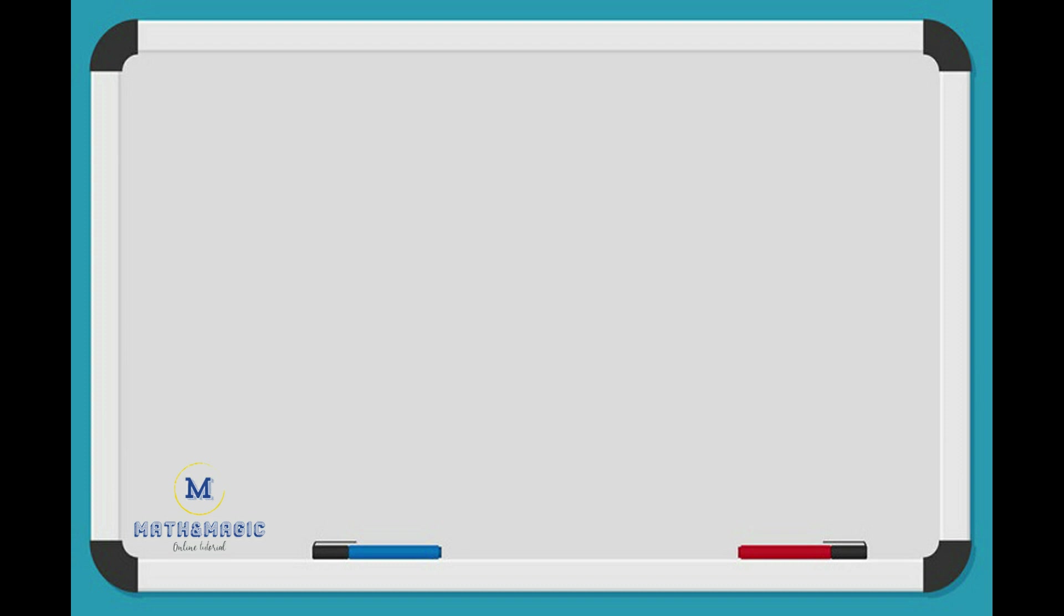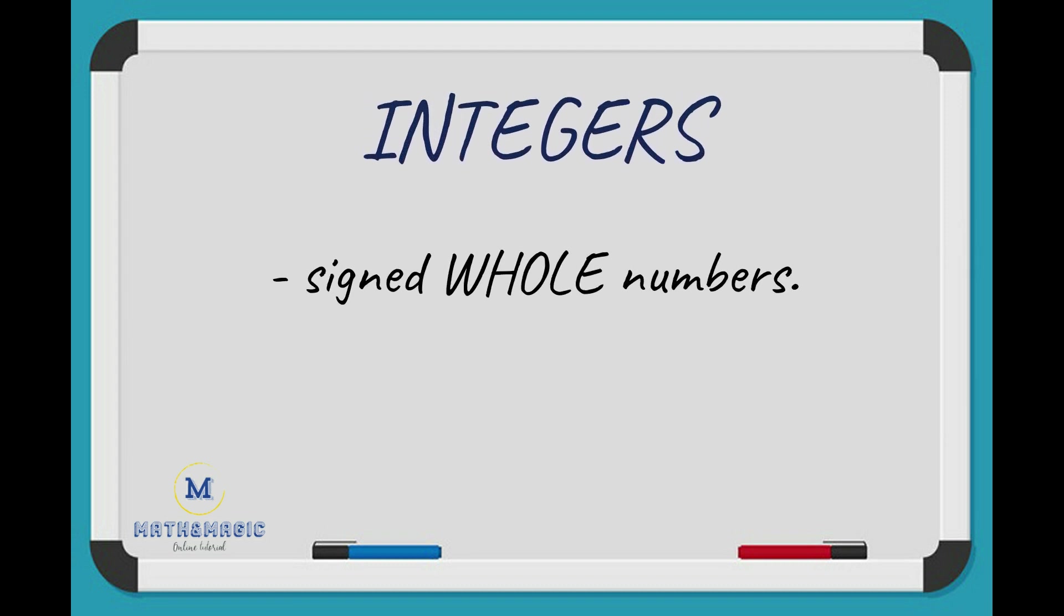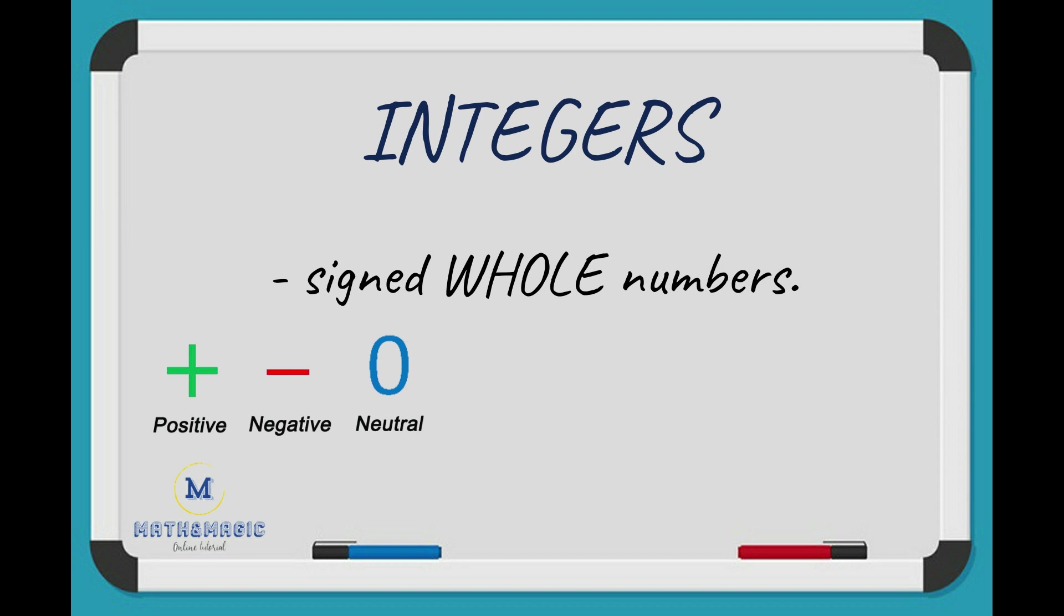Before dealing with addition and subtraction of integers, let us define it first. Integers are signed whole numbers. Signed in a sense that numbers can be represented as a positive, a negative, or a neutral zero.